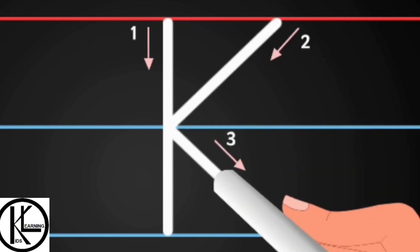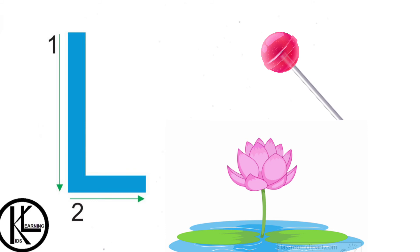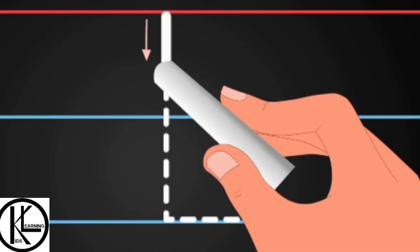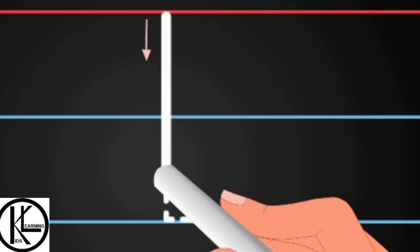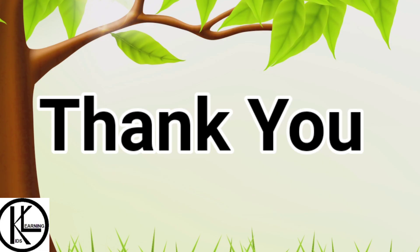And then again a slanting line. This is letter L. L says 'la la la', lollipop. And L is for lotus. Now let's see how to write letter L. First you have to make a standing line and then a sleeping line. Ok kids, thank you so much!